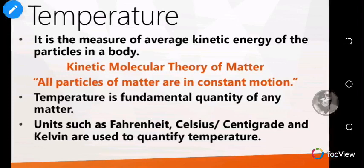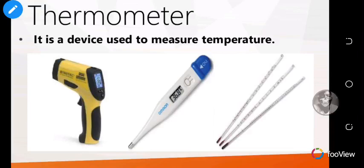Temperature is a fundamental quantity of any matter, which means you cannot derive temperature — it is a basic quantity and it's everywhere. The units of temperature are Fahrenheit, Celsius or centigrade, and Kelvin. These are used to quantify temperature.